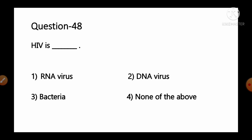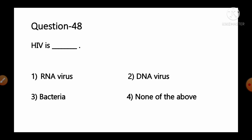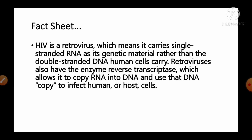Question number 48: HIV is — options: 1) RNA virus, 2) DNA virus, 3) bacteria, 4) none of the above. HIV is a retrovirus that carries single-stranded RNA as its genetic material rather than double-stranded DNA. Retroviruses also have the enzyme reverse transcriptase, which allows them to copy RNA into DNA to infect host cells. So option number 1, RNA virus, is the correct answer.